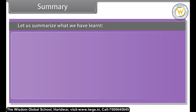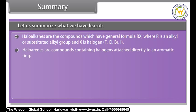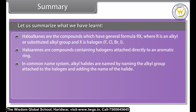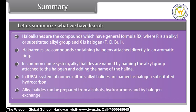In summary, haloalkanes are compounds with the general formula RX, where R is an alkyl or substituted alkyl group and X is a halogen (F, Cl, Br, or I). Haloarenes are compounds containing halogens attached directly to an aromatic ring. In the common name system, alkyl halides are named by the alkyl group plus halide name; in IUPAC they are named as halogen-substituted hydrocarbons. Alkyl halides can be prepared from alcohols, hydrocarbons, and by halogen exchange.